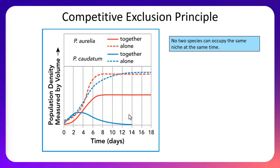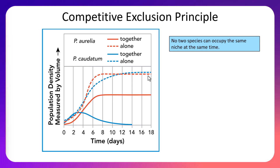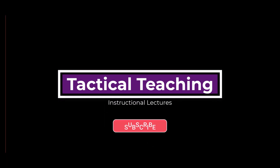To pull it all together: organisms feeling competitive pressure naturally find ways to reduce it. In Australia, koalas and greater gliders both eat eucalyptus leaves in the same environment — they should face intense competition. But they've avoided it by being active at very different times: koalas are nocturnal while greater gliders are crepuscular, meaning active at dawn and dusk. This is a great example of resource partitioning — using the same resources but at different times — allowing them to coexist.